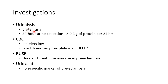Urinalysis should be done; if proteinuria is detected, a 24-hour urine collection is performed. The criterion for preeclampsia is greater than 0.3 gram of protein per 24 hours. Complete blood count should be done — platelets are usually low in preeclampsia. Low hemoglobin with very low platelets should raise suspicion of HELLP syndrome, which stands for hemolysis, elevated liver enzymes, and low platelets.